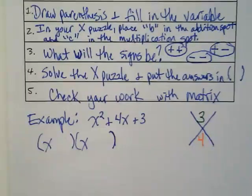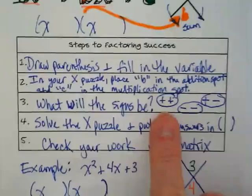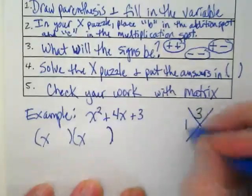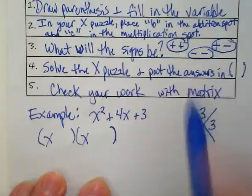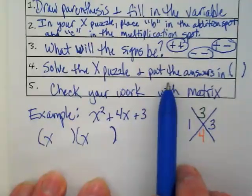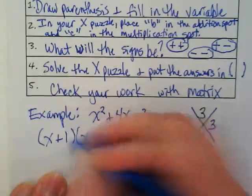And now we're going to solve the X puzzle. What are two numbers that when I add them I get four, and when I multiply them I get three? Three and one. Three and one, and they're both what kind of number? Positive. So our signs are both positive. We're going to have this set here, so we get one and three. The second part of step four is to put the answers in the parentheses, so we get plus one and plus three.